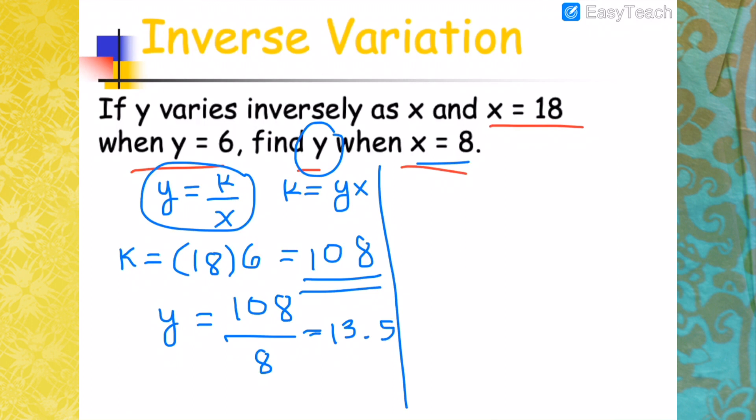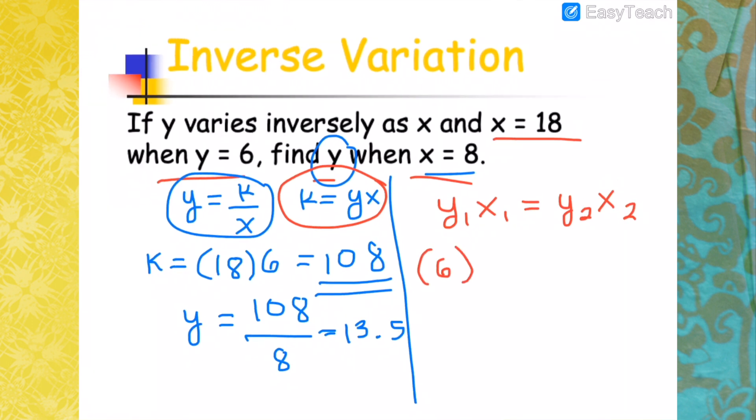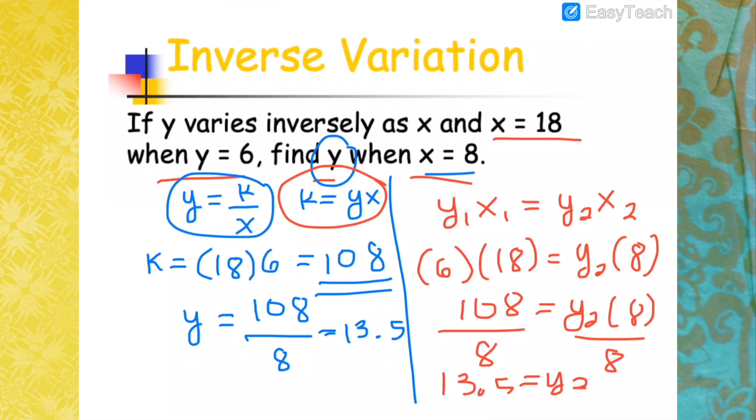Using the other way of solving this, you will have Y1 X1 equals Y2 X2. Y1 is 6, X1 is 18, equals Y2 times X2, which is 8. 6 times 18 is 108, equals Y2 times 8. So divide this by 8. You will get Y2 equals 13.5.